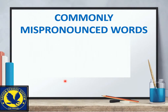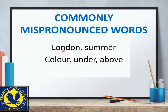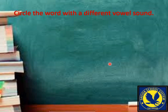Commonly mispronounced words میں بہت سے الفاظ ہیں جن میں ʌ sound آنی چاہیے لیکن ہم کوئی اور vowel لگا دیتے ہیں — جیسے 'london', 'summer', 'color', 'under', 'above'۔ ان سب میں چاہے o آ رہا ہو، u آ رہا ہو — ہمیں ان کو ʌ sound کے ساتھ پڑھنا ہے اور کوئی اور sound pronounce نہیں کرنی۔